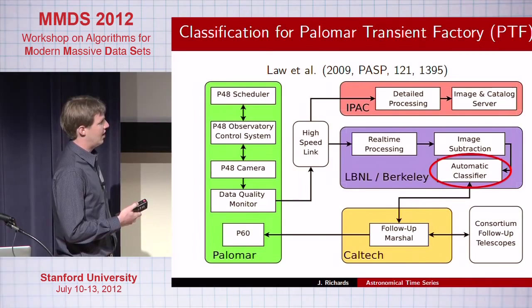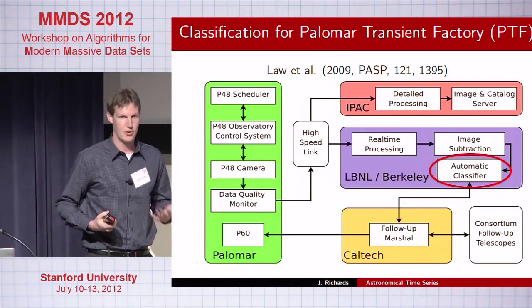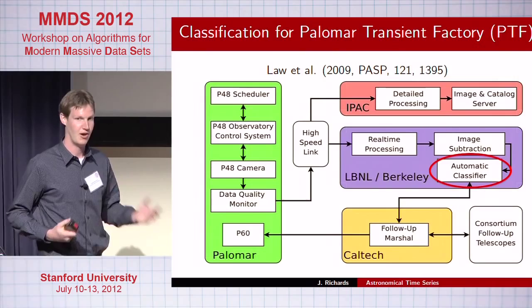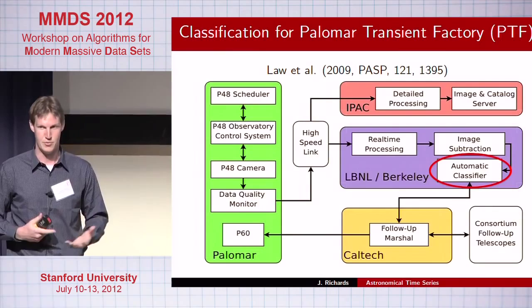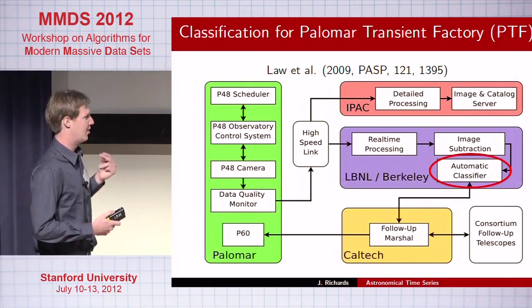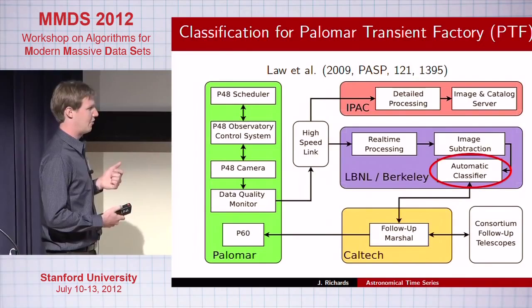Those subtractions and references are sent to us where we do classification in two steps. First is separating artifacts from real astrophysically varying objects — about a 1,000-to-1 ratio of artifacts to reals. Then, once we know it's real, we want to know: is it a supernova or a variable star? Supernovae explode and never come back; variable stars pulsate and go up and down forever. If it's a supernova, we send that information as fast as possible to Caltech, where they decide whether to follow up with other telescopes.